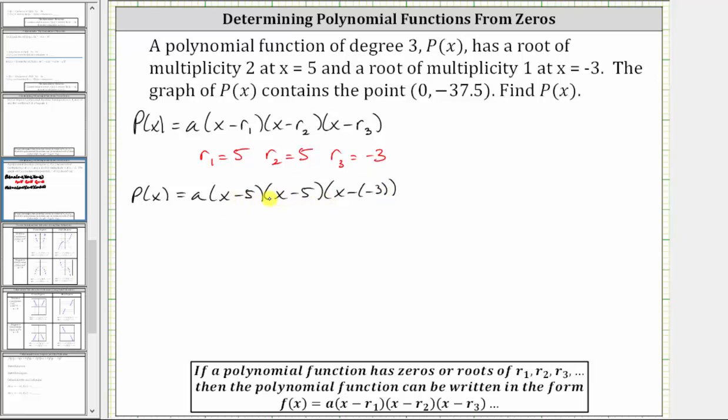Let's also write this as the quantity x minus five squared. So we know p(x) is equal to a times the quantity x minus five squared times x plus three. Now we need to find the value of a using the given point, which is the y-intercept. Because we are given the point zero comma negative 37.5, we know that p(0) must equal negative 37.5.